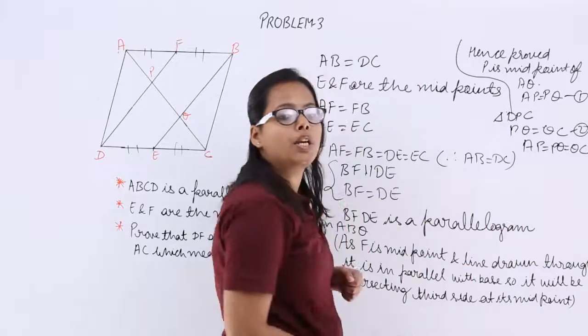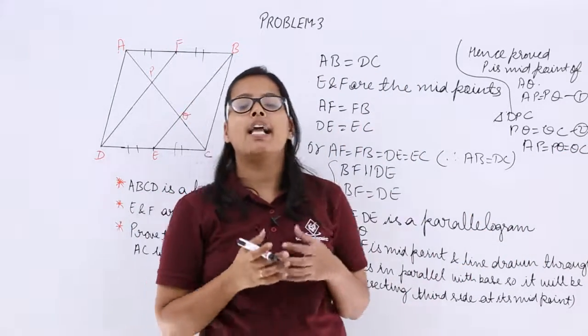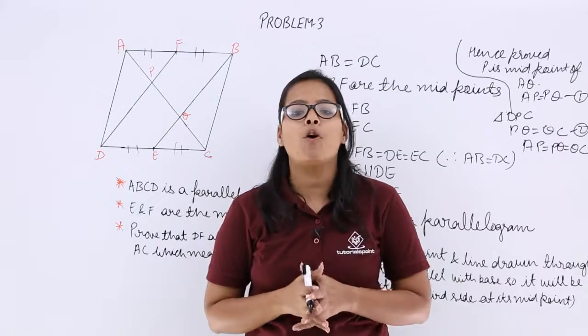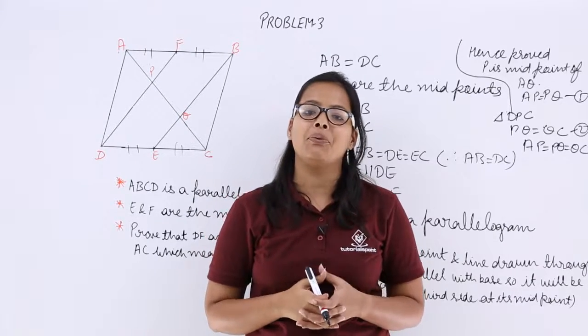So you can write: AP is equal to PQ is equal to QC. I will be taking more problems in the next video lecture. Thank you.